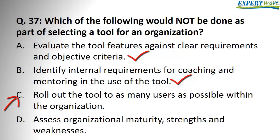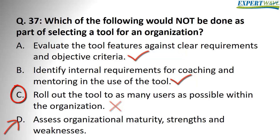Answer C: roll out the tool to as many users as possible within the organization — this is wrong, because we should roll out the tool gradually, not to as many users as possible. Answer D: assess organizational maturity strengths and weaknesses — this is also correct. So the correct answer is C.